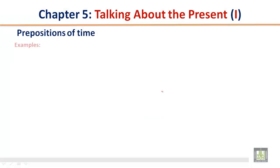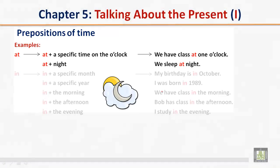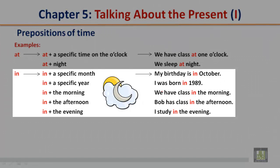Prepositions of time. 'At' plus a specific time on the o'clock: We have a class at 1 o'clock. 'At' plus night: We sleep at night. 'In' plus a specific month: My birthday is in October. 'In' plus a specific year: I was born in 1989. 'In' plus the morning: We have class in the morning. 'In' plus the afternoon: Bob has class in the afternoon. 'In' plus the evening: I study in the evening.